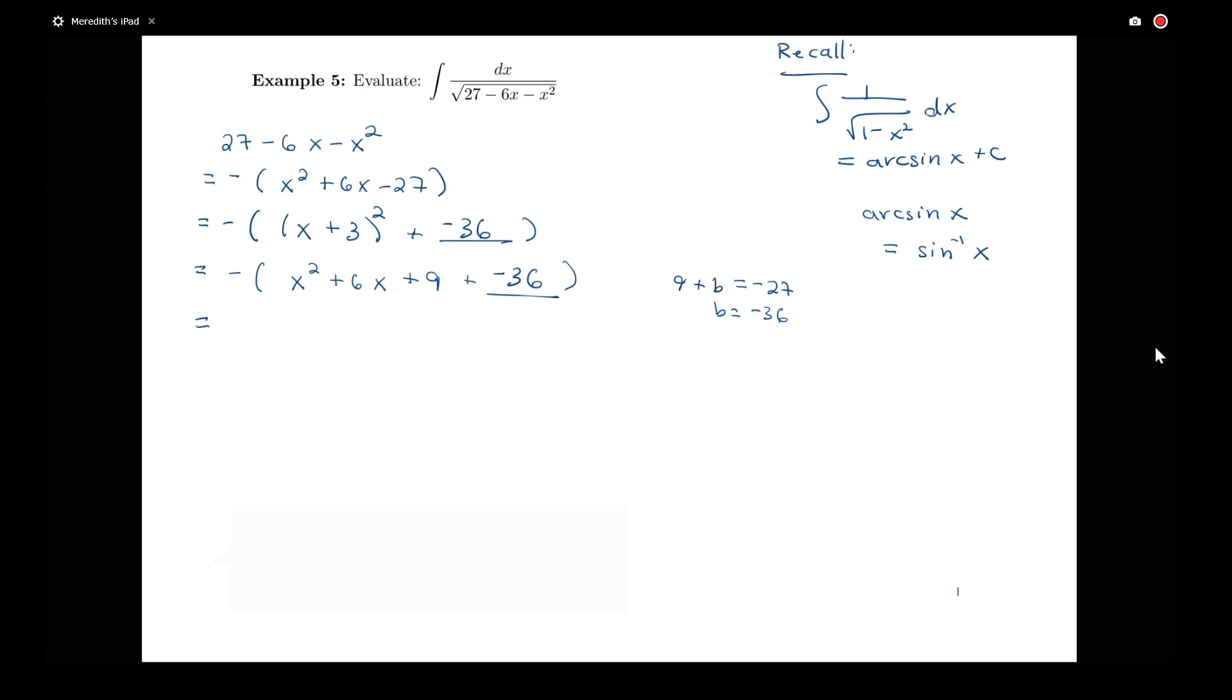So now I can rewrite this a little bit in a form that will make it more clear how this is related to arc sine. I'm going to distribute that negative sign back through. I'm going to focus on this particular line. So I'll have this negative times my x plus 3 squared and the negative times the negative 36. So I get 36 minus x plus 3 squared. So that completing the square.